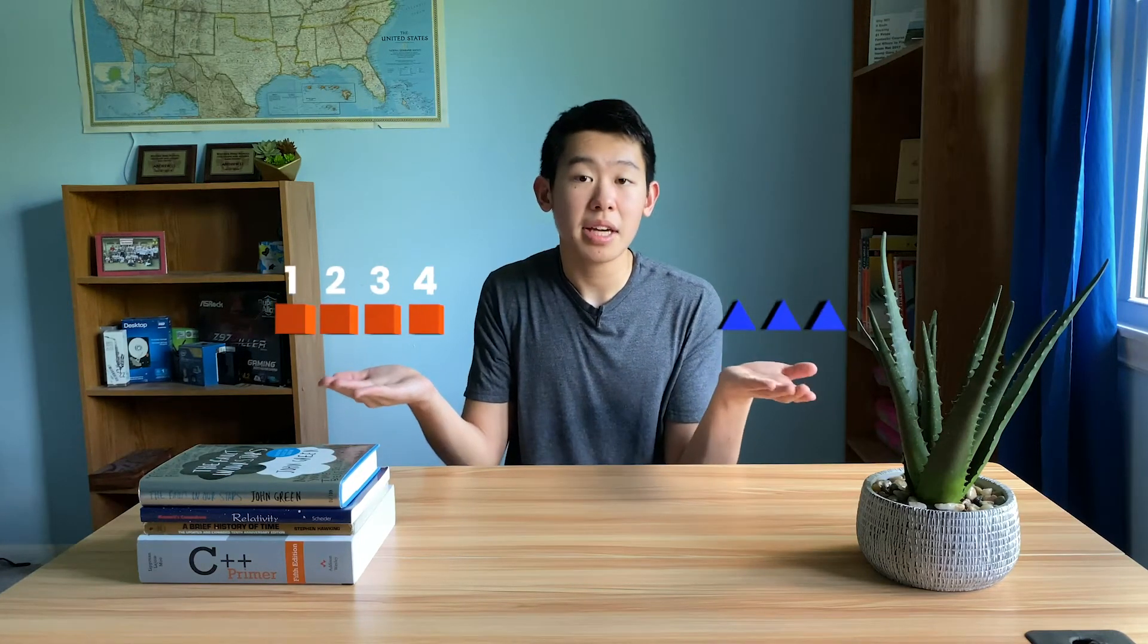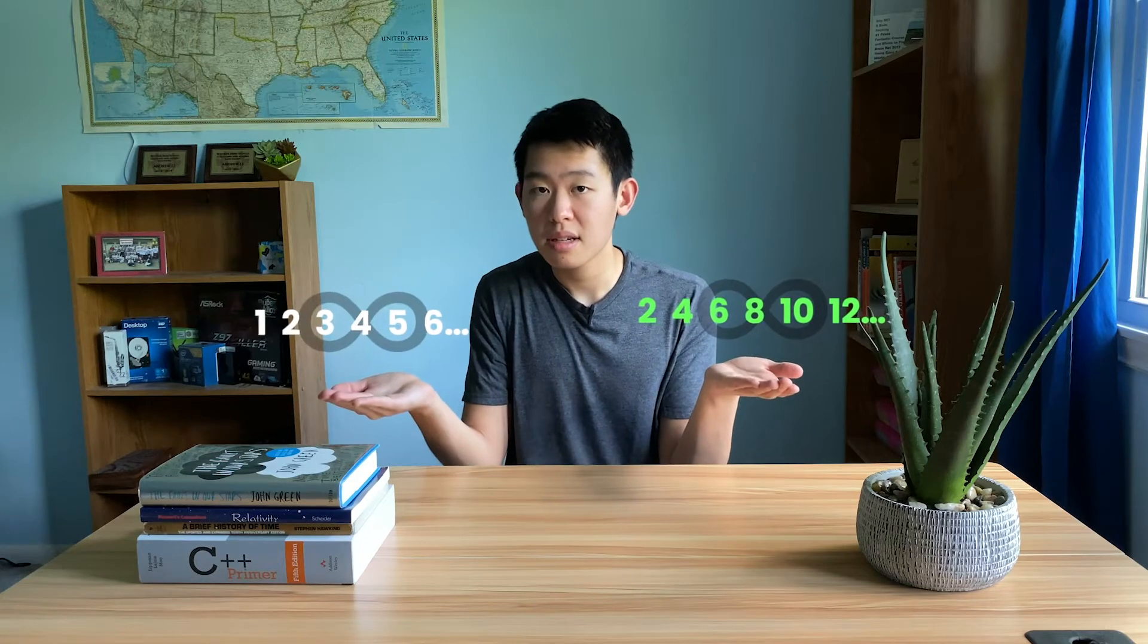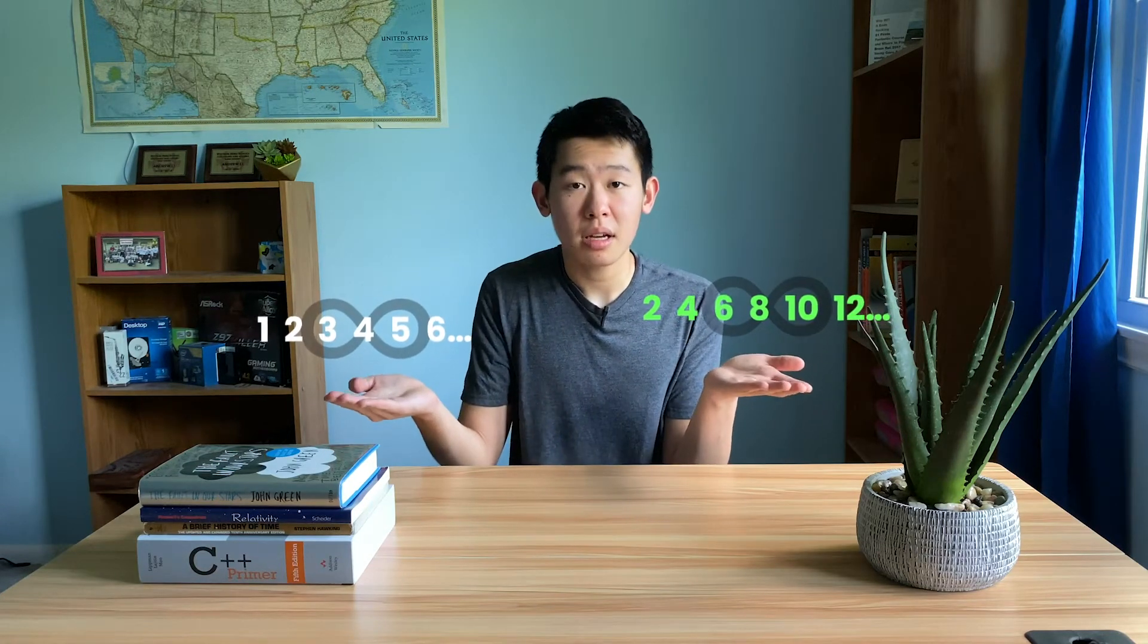What makes one set of things larger than another? Usually we can count, but what about something infinite? We can't exactly count to infinity, so what makes one infinity larger than another?